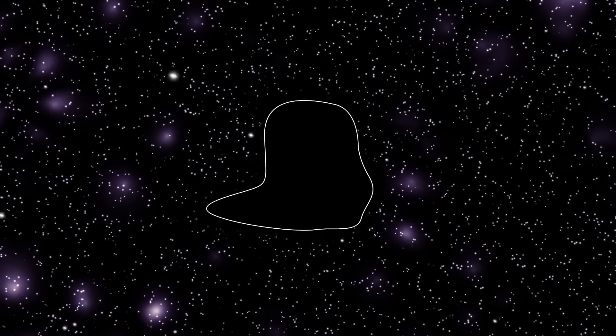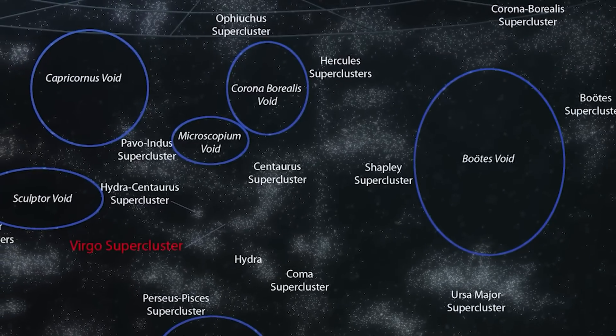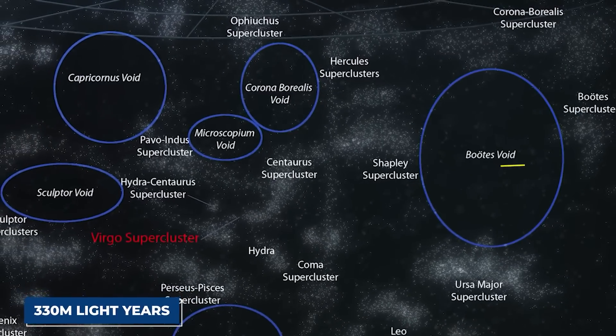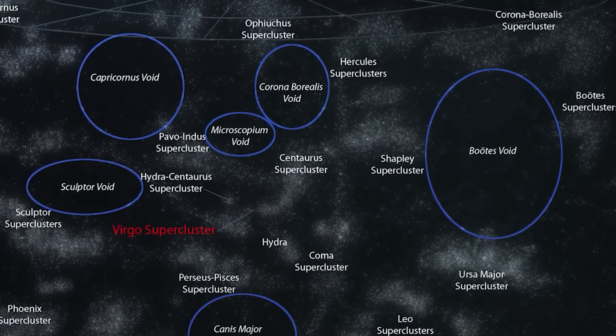Around 700 million light-years from Earth, there was a huge void. A roughly spherical region, almost 330 million light-years wide, was staring back at the researchers.